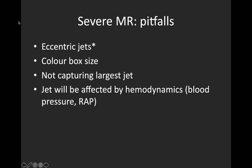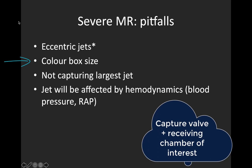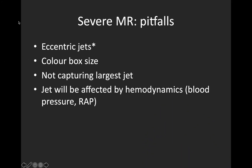There are a few pitfalls to be aware of with qualitative valve assessment. One of the most frequent errors made by beginners is incorrect sizing or placement of the color box. Because we assess regurgitation severity by how much of the left atrium the jet fills and whether it hits the back wall, it's imperative that we see the whole left atrium — the general rule is that the color box should capture the valve itself as well as the entire receiving chamber. Also make every effort to capture the maximal regurgitant jet by looking in multiple views and making small fanning or rotating movements. Note that the patient's hemodynamics will affect severity of the regurgitant lesion.